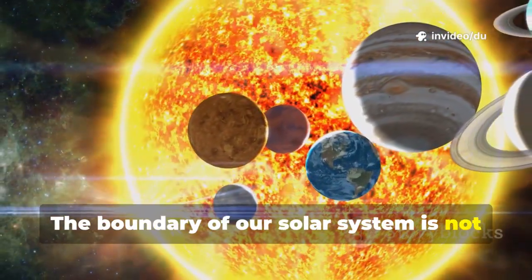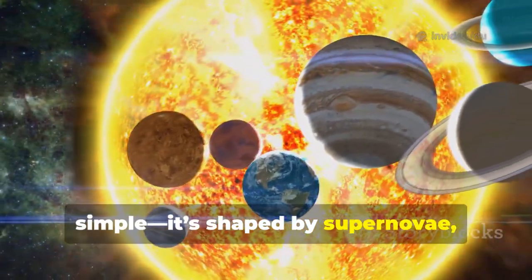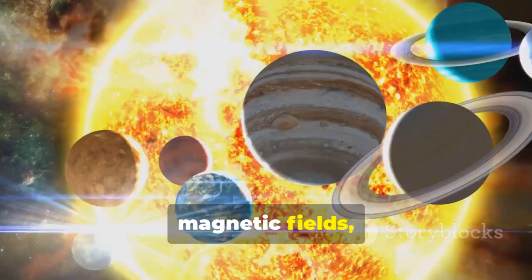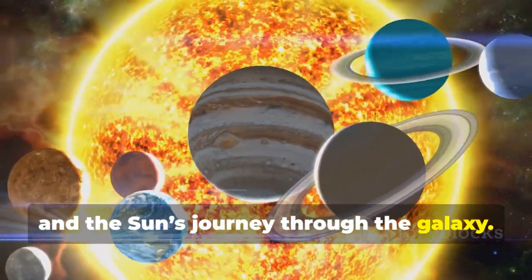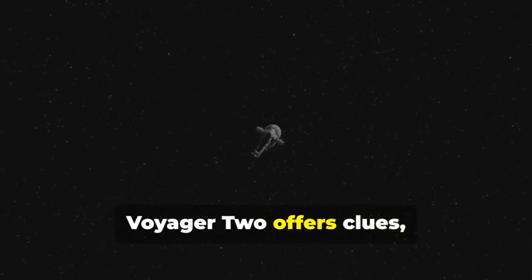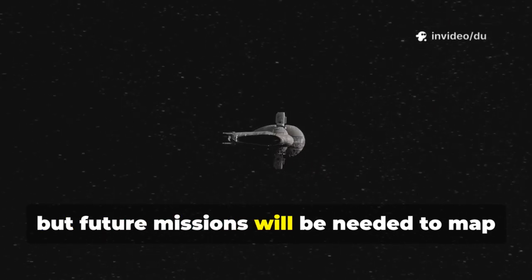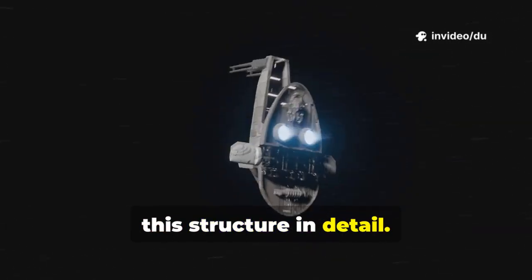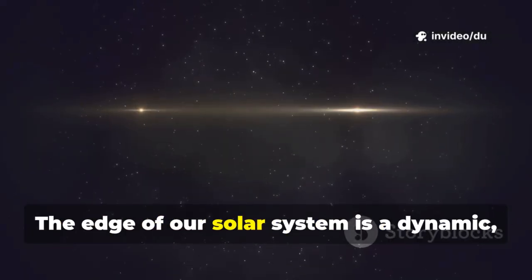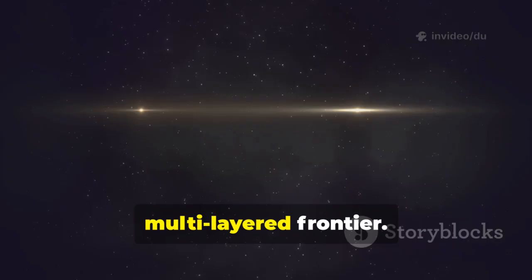The boundary of our solar system is not simple. It's shaped by supernovae, magnetic fields, and the Sun's journey through the galaxy. Voyager 2 offers clues, but future missions will be needed to map this structure in detail. The edge of our solar system is a dynamic, multi-layered frontier.